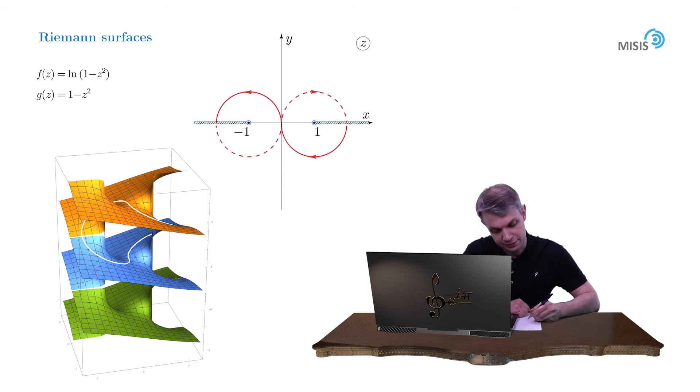So our assignment is to find the integral of our log function along this contour. First of all let us choose the regular branch of our log function. And it is chosen in such a way that the function is real as x belongs to the segment from negative 1 to 1.